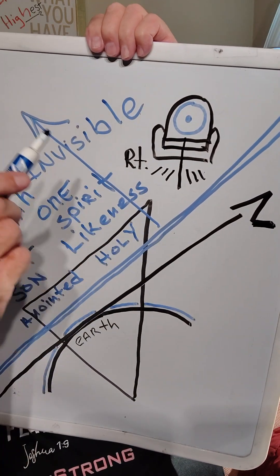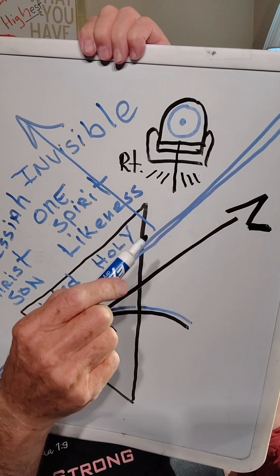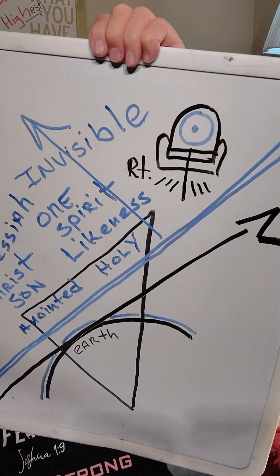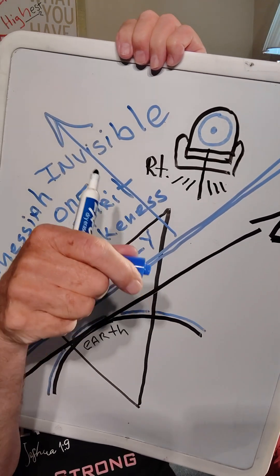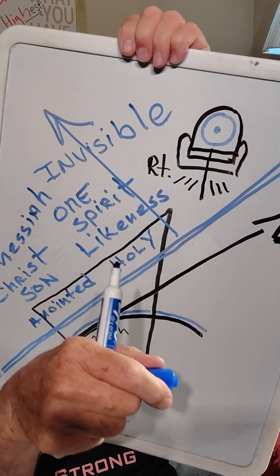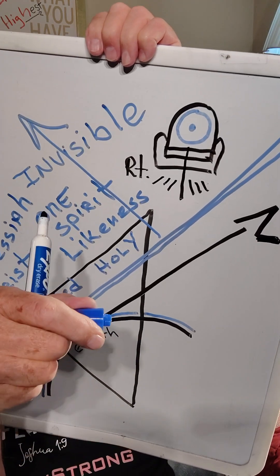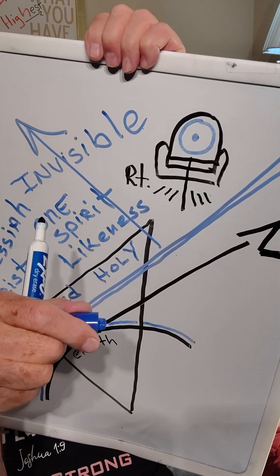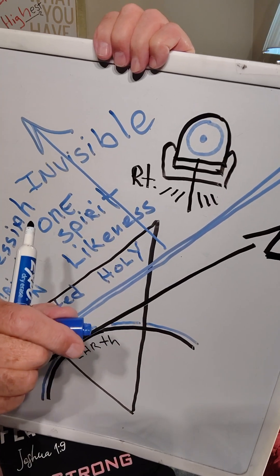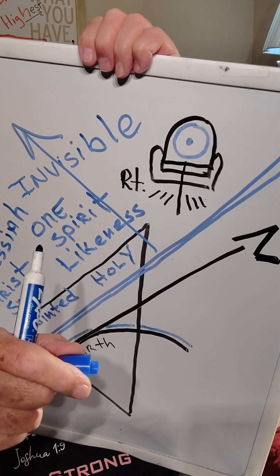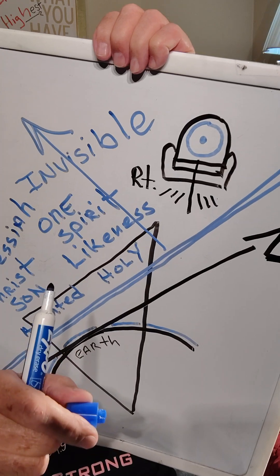Everything to this way on the blue double line is invisible. It's spiritual. You can't see it. There's no image, no man, no person. It's all spiritual likeness.